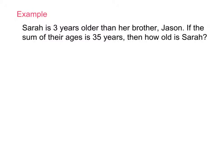Our first example: Sarah is three years older than her brother Jason. We don't know Sarah's age and we don't know Jason's age, but Sarah is three years older than Jason. If the sum of their ages is 35, how old is Sarah? The important facts are: Sarah is three years older than Jason, and Sarah's age plus Jason's age equals 35.